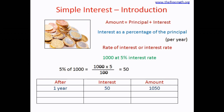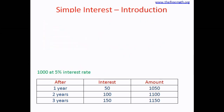What if you borrow it for two years? Since the interest is per year, for the first year you pay 50 and for the second year you pay another 50, so the total interest is 100 rupees and the amount is 1100. If you borrow for three years, the interest is 150 and the amount will be 1000 plus 150, which is 1150. This kind of calculation — for 1000 rupees at 5% for one year, two years, three years — is called simple interest.